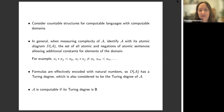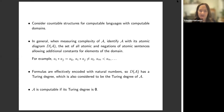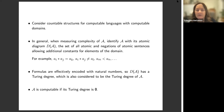As usual, we consider countable structures for computable languages, and we'll assume the domains are computable, so the difficulty will not be with the domain but with the structure itself. When we measure complexity of a structure A, we'll identify A with its atomic diagram — that's the set of all atomic and negations of atomic sentences with additional constants for the elements of the domain, such as in groups ai times aj equals ak, or in ordered structures am less than am. This is the same as taking the quantifier-free diagram.